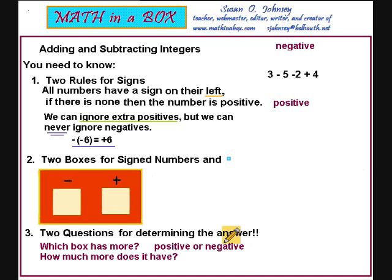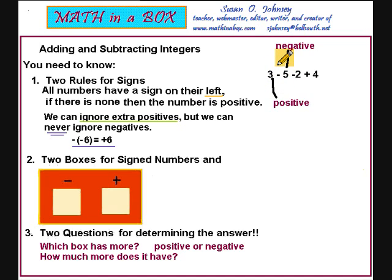We are going to begin with the two rules for signs. There are two rules to learn. All numbers have a sign on their left. If there is not a sign on the left, then it is a positive number. Let's look at this expression that I have written here on the right. The three does not have a sign on its left, so it is considered a positive number. The five has a negative on its left, so the five is considered to be a negative number. The two also has a negative sign on its left, so it is considered a negative number. The four has a positive sign on its left side, so the four is considered a positive number.